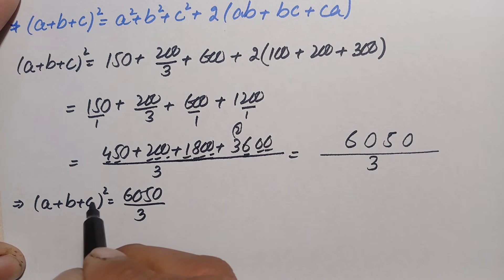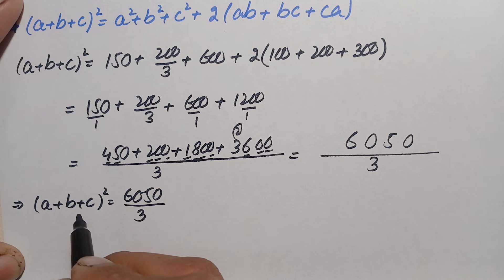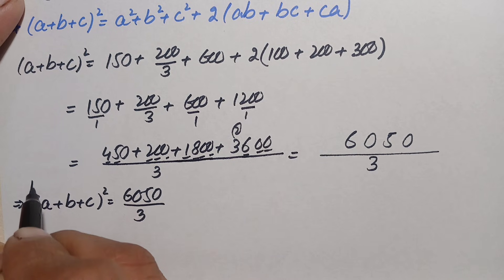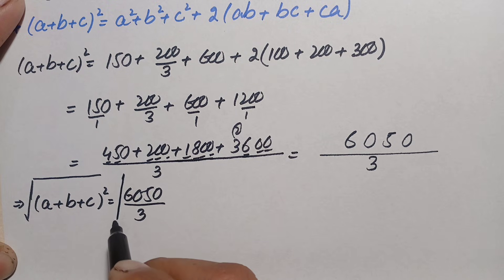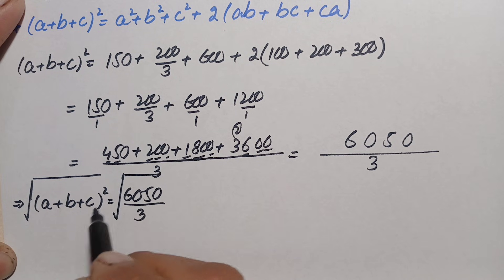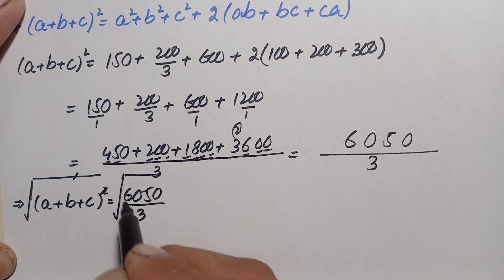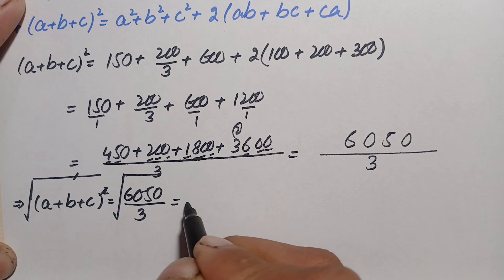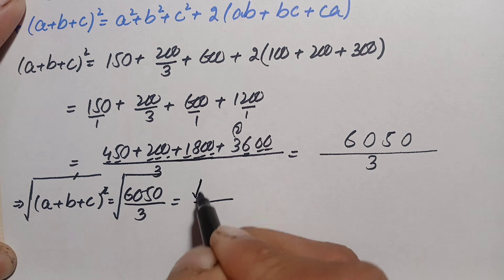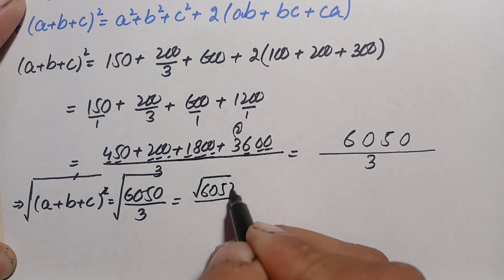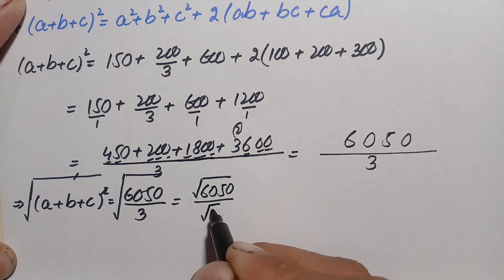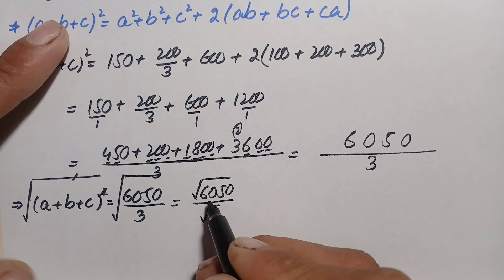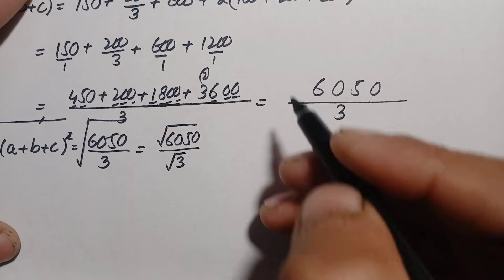To eliminate the square on the left-hand side, we take the square root on both sides. This gives a + b + c equals square root of 6050 divided by square root of 3. Now we factorize 6050.